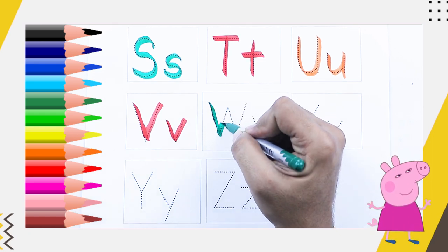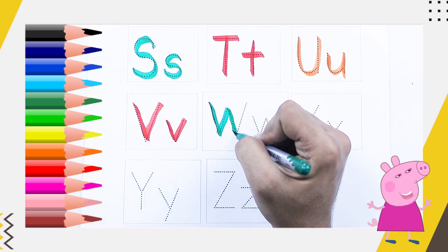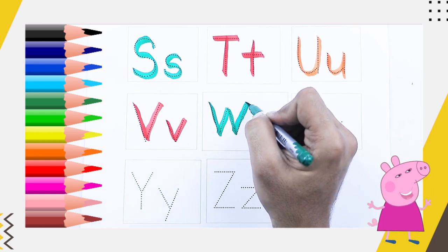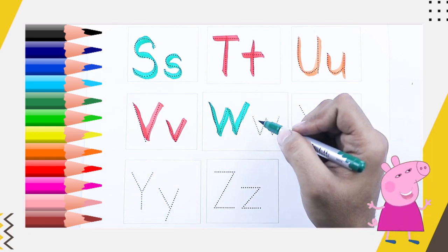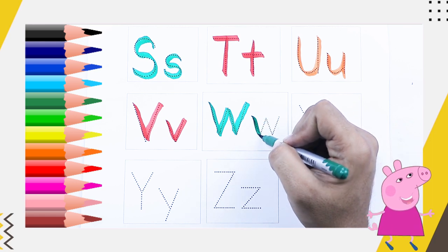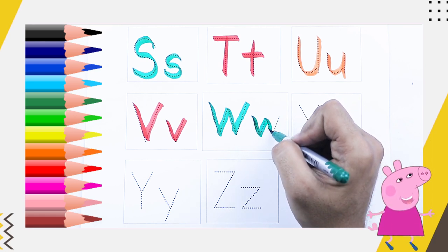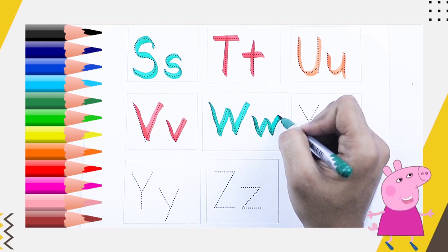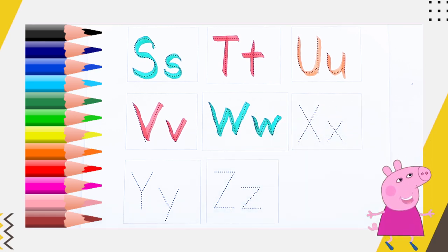Green color capital W, W for watch. Green color small w, w for watch.